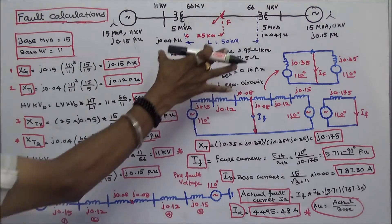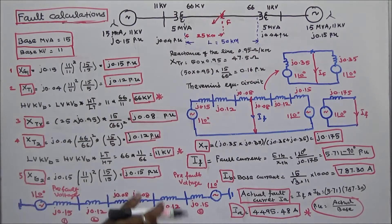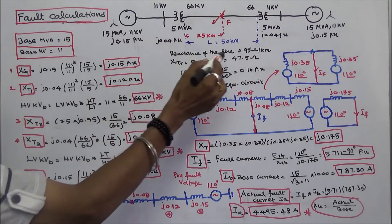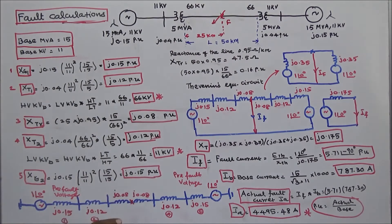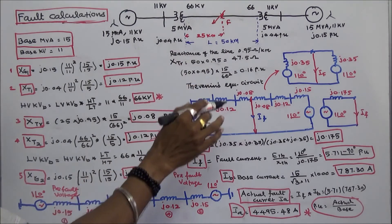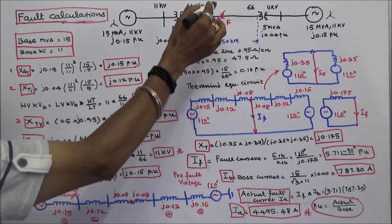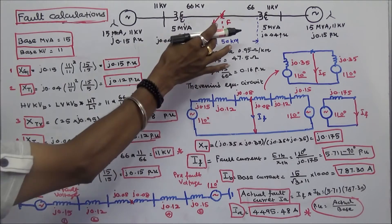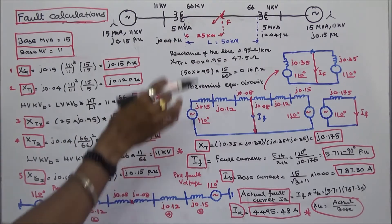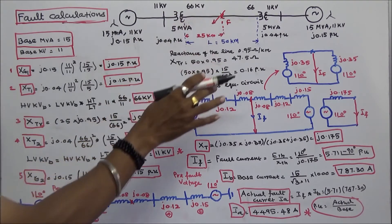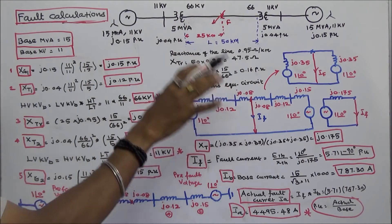The length of the transmission line is 50 km, with a reactance of 0.95 ohm per km. The question is: if a fault occurs at the midpoint of the line, that is at 25 km, calculate the per-unit fault current and the actual fault current.